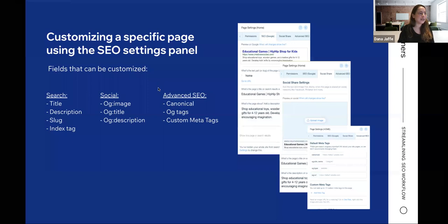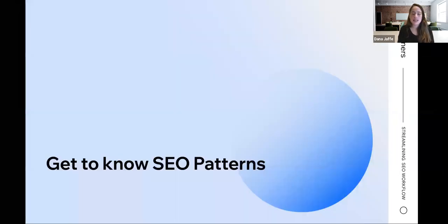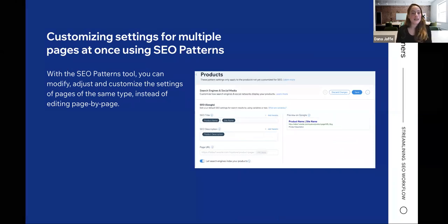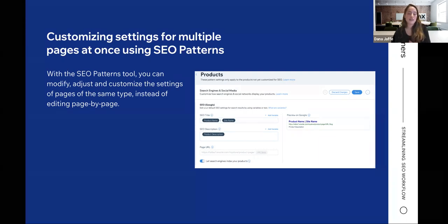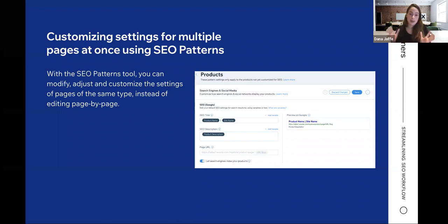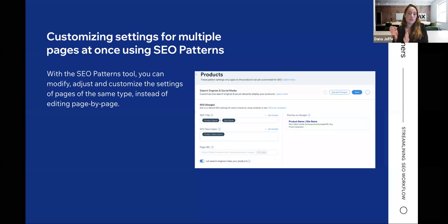Let's continue and talk about SEO patterns. After seeing how to edit SEO settings for a specific page, you might wonder: what do I do if I have dozens of pages, like product pages — do I have to go one by one? This is exactly why we came up with SEO patterns. SEO patterns allows you to customize the SEO settings for all pages of a specific type at once. To create unique and efficient patterns, you can use variables — dynamic values that change according to the specific page.